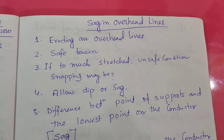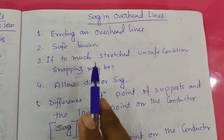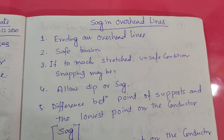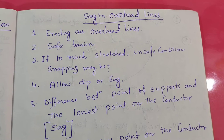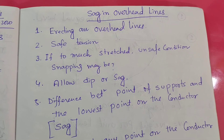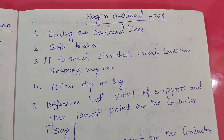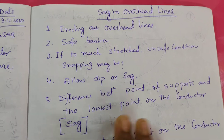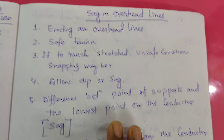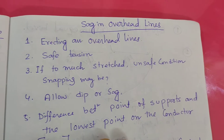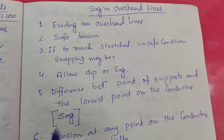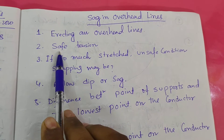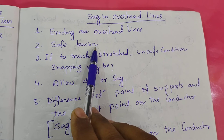Today our discussing topic is about SAG. What is SAG? SAG is used at the transmission line or distribution line. It is most important in the transmission line in the plain area, flat area, flat land, or also in the hilly area. It depends on the equal and unequal distribution level and support level. So it is very important during the erection of the overhead line.